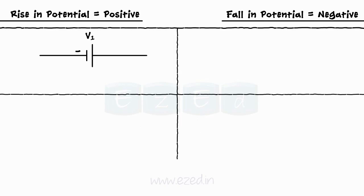Let's elaborate this. If we go from negative of the battery to its positive terminal, we get rise in potential. We represent it as plus V. If we go from positive to negative, we find fall in potential. Thus, we represent it as minus V.